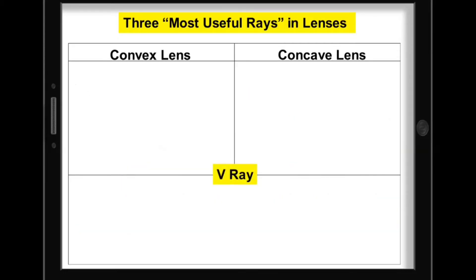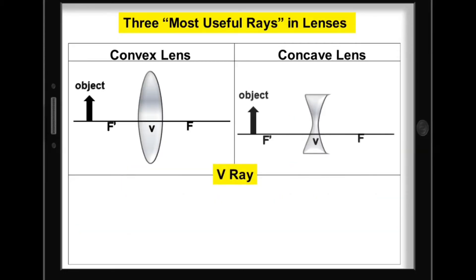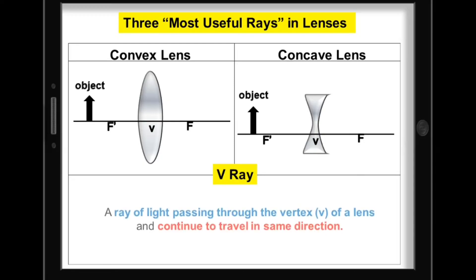And lastly, the V ray for both convex and concave lenses, which is a ray of light passing through the vertex of a lens and continues to travel in the same direction.